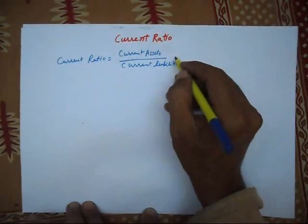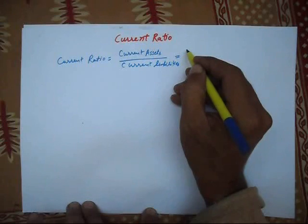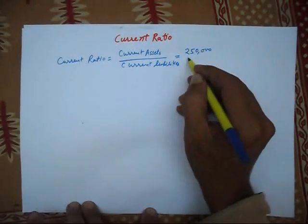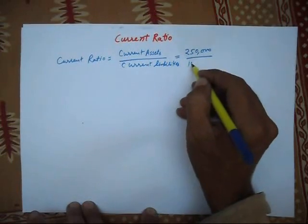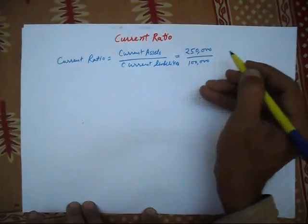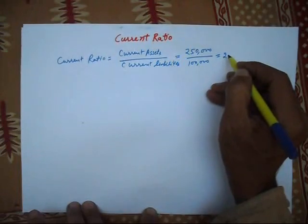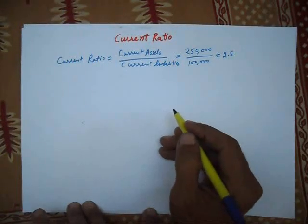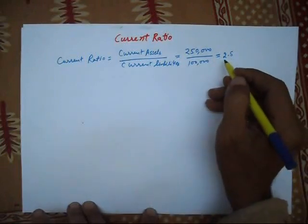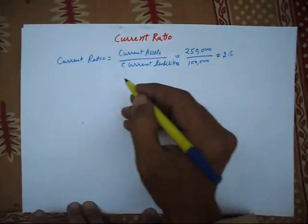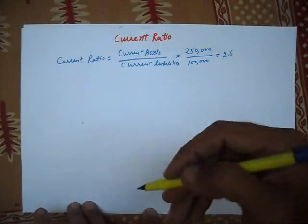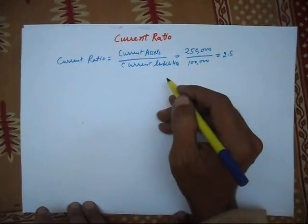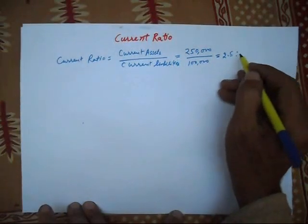Suppose current assets are two lakh fifty thousand and current liabilities are one lakh. Ratio will be two point five. It means our current assets are two point five times more than current liabilities.